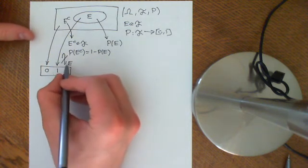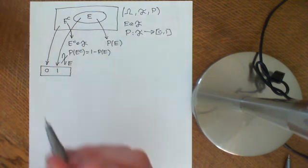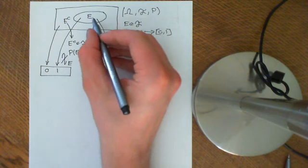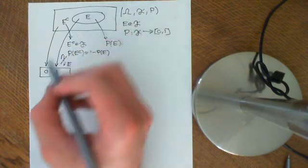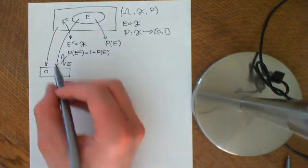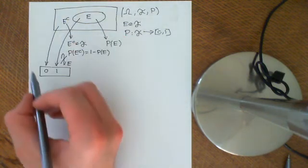Which is the indicator random variable for e. So it basically just sends the event e to the outcome 1, and it sends the event e complement to 0.